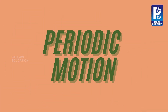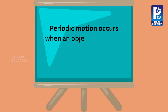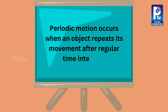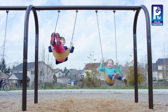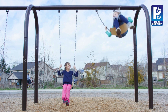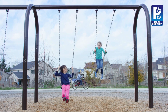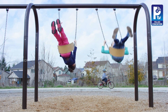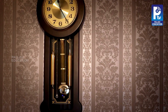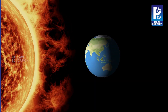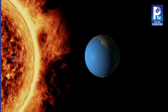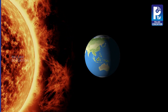Periodic motion occurs when an object repeats its movement after regular time intervals. For example, a swing in a playground moves back and forth at regular intervals. Similarly, the pendulum of a clock, and even the Earth's rotation and revolution, are examples of periodic motion.